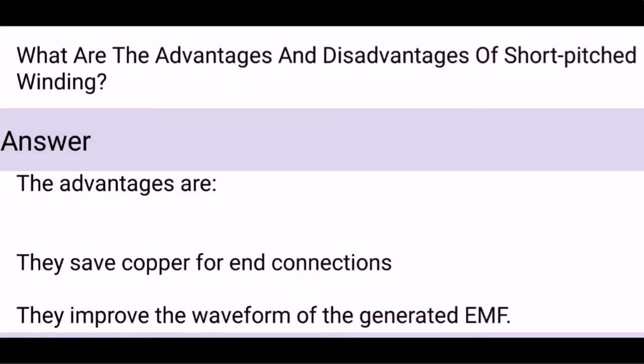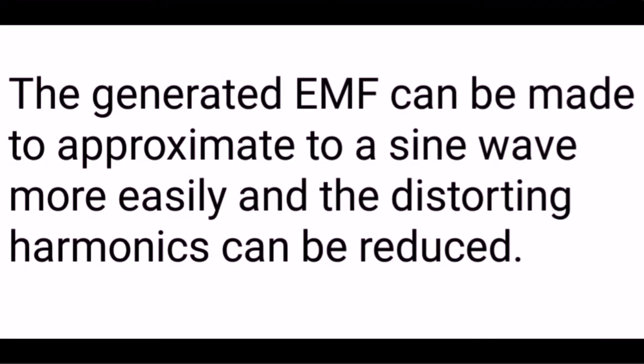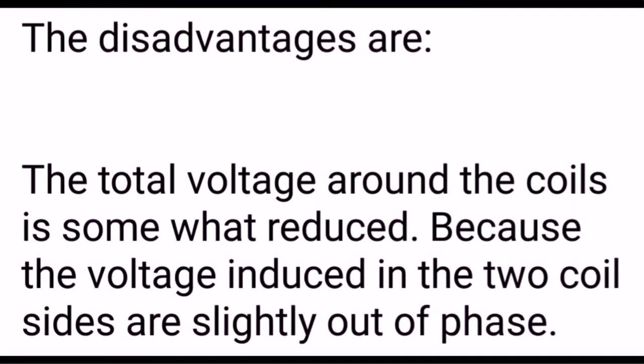What are the advantages and disadvantages of short-pitched winding? The advantages are: they save copper for end connections, they improve the waveform of the generated EMF, and the generated EMF can be made to approximate a sine wave more easily while distorting harmonics can be reduced. The disadvantage is that the total voltage around the coils is somewhat reduced, because the voltages induced in the two coil sides are slightly out of phase.